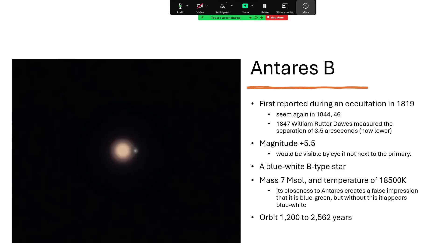So these two stars are in orbit around each other. And since Rutter Dawes' time, the separation between them has closed somewhat. We think the orbit is somewhere between 1200 and 2500 years in length. Different estimates have been made of that.